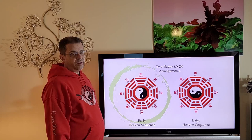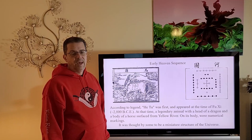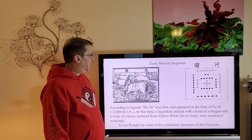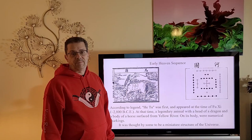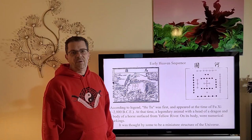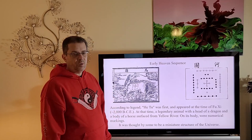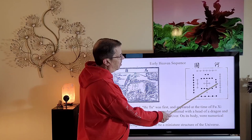We start with the early heaven sequence. According to legend, He Tu was first and appeared at the time of Fu Qi around 2800 BC. It is said that an animal with the head of a dragon and the body of a horse came out of the yellow river, and on its body were these markings. You can see the arrangement of the numbers in opposites balanced around the center, Yang in white and Yin in black.